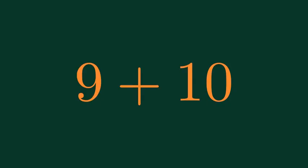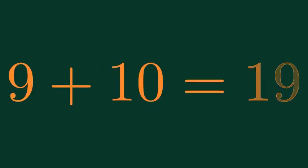What is 9 plus 10? 9 plus 10 is equal to 19.